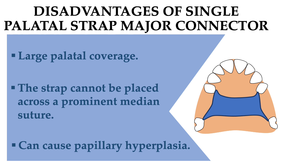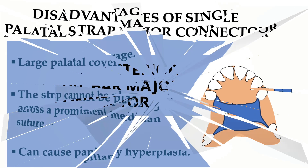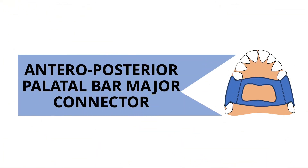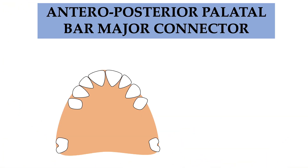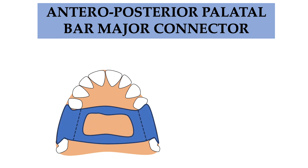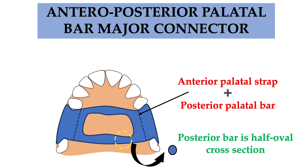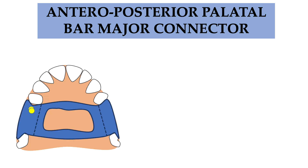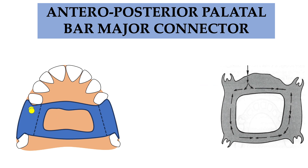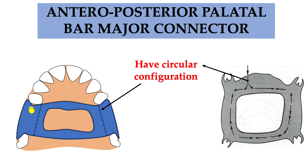The third connector is the anterior-posterior palatal bar major connector. As seen in the figure, it is a combination of an anterior palatal strap and a posterior palatal bar. The posterior bar is half-oval shaped in cross-section, similar to the palatal bar. An important property is that it has a roughly circular configuration.